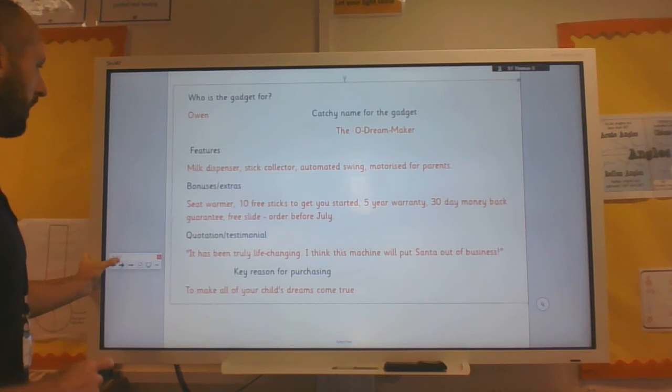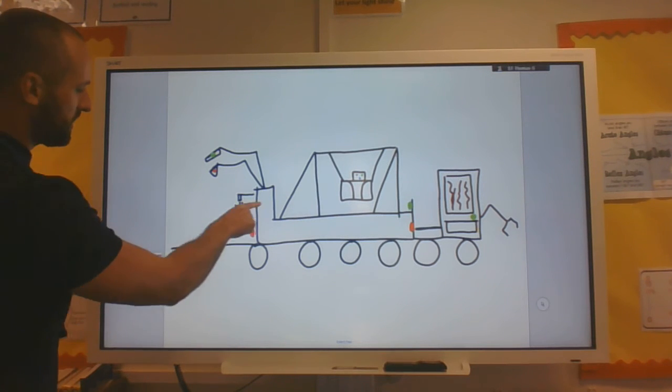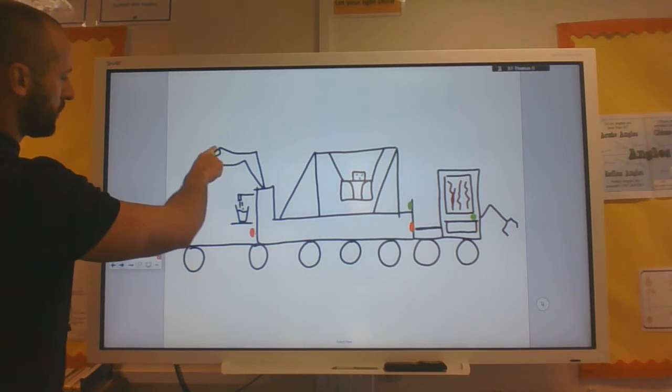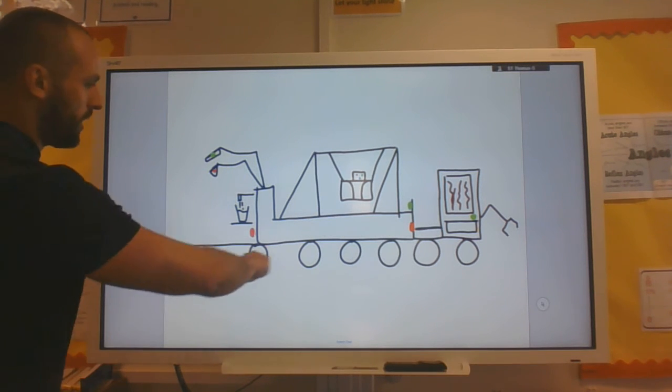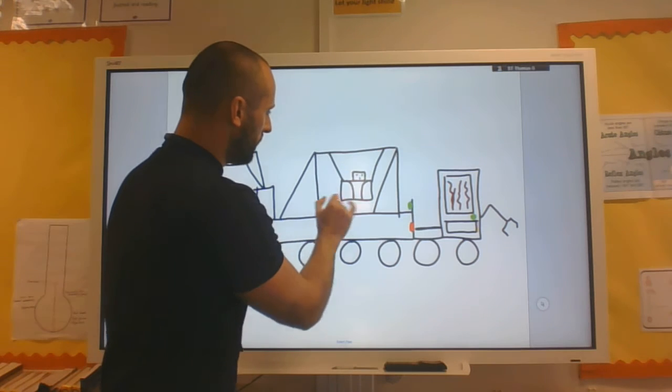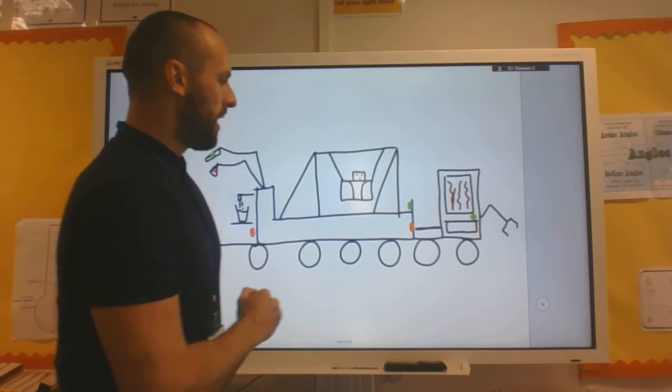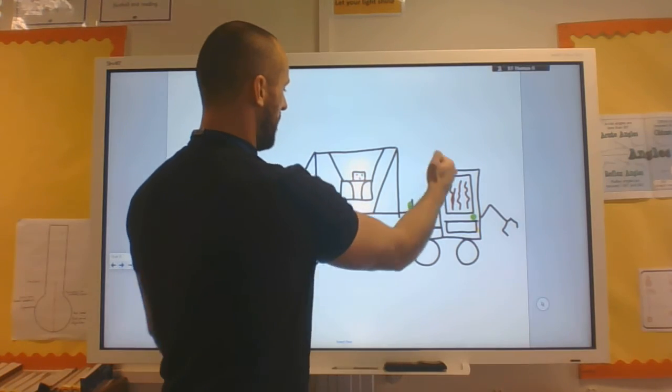And then I've also had a go at designing it. So we can see there's the milk dispenser with a button. Here we've got the controls for the parent and the wheel so obviously it moves. There's the swing with the panel of controls there and we've got a lift to get up to the swing.